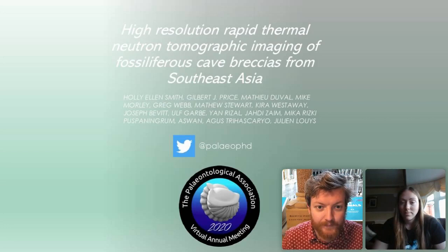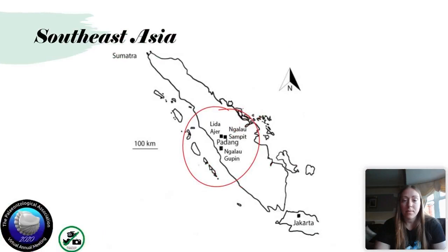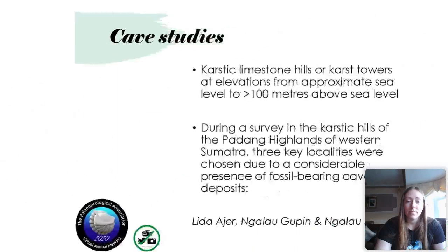Thank you very much. Hi everyone, my name is Holly. I'm a PhD candidate at the Australian Research Centre for Human Evolution at Griffith University in Australia, and this research forms part of my thesis. My research location is Southeast Asia because the tropical climate and the geological evolution of the region created a rich paleohistory throughout the Pleistocene.